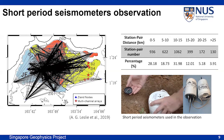Most previous ambient noise tomography work is concentrated on periods higher than five seconds to get shear velocity of 10 kilometers or more. But in our work, we want to focus on structures within one kilometer, which is more related to engineering purposes. If we plot the ray paths along each two stations, we find our inter-station distance is relatively short, so it is possible to use a relatively high frequency in ambient noise tomography.